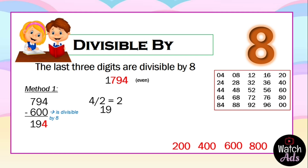We then add 2 to 90, giving us 21. We check if 21 is divisible by 4 — it is not, which means that 1794 is not divisible by 8.